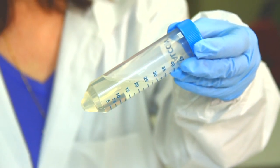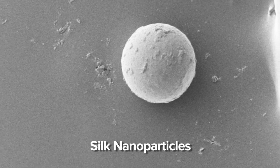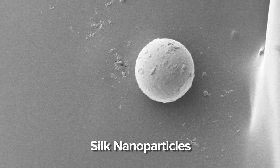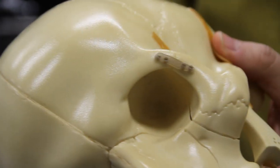And this is where silk becomes an incredibly versatile material. So for example, we can make everything from nano and microparticles for injectable drug delivery applications. We make solid plates and screws for orthopedic repair devices.